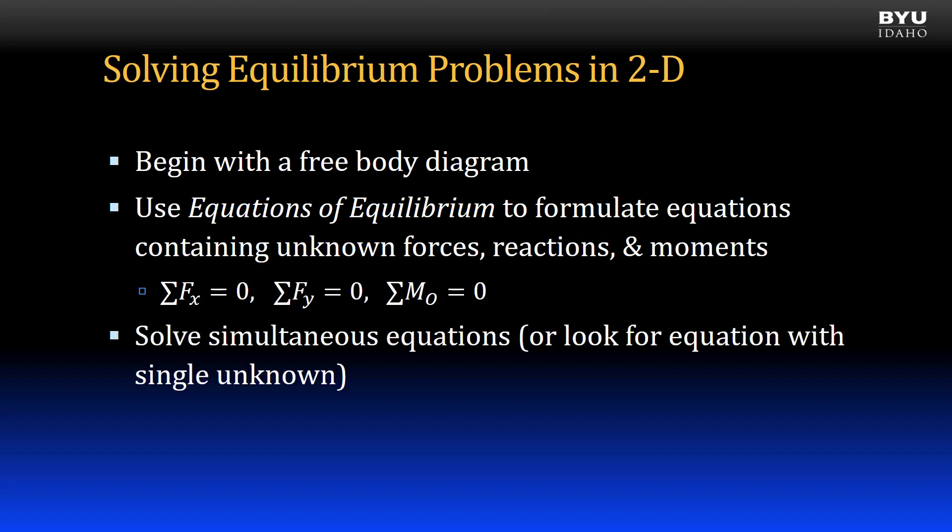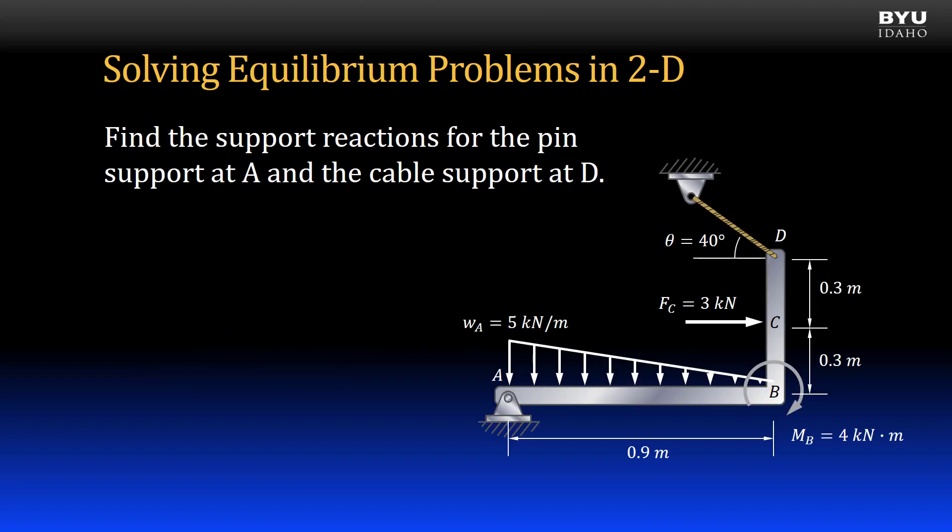Once we have sorted out what equations of equilibrium are available to us, we look carefully at our problem to see if we can write an equation of equilibrium that has only a single unknown. If so, we solve it first, then move on to the other equations. If not, we will write out our equations and solve them simultaneously. Let's use this approach in an example.